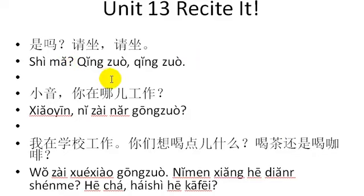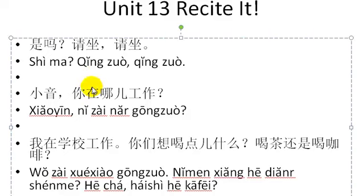Next we have 是吗? 请坐, 请坐. Let's try that three times. 是吗? 请坐, 请坐. I removed the third tone here that was incorrect. 是吗? 请坐, 请坐. 是吗? 请坐, 请坐.